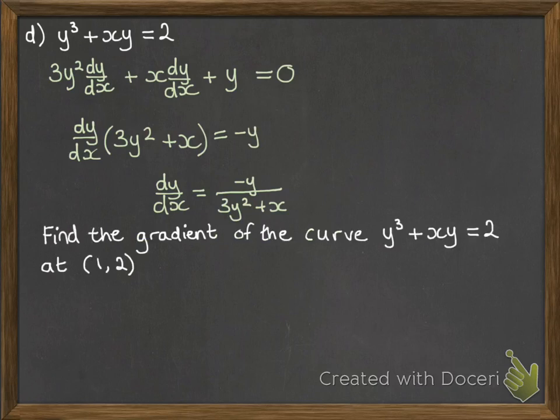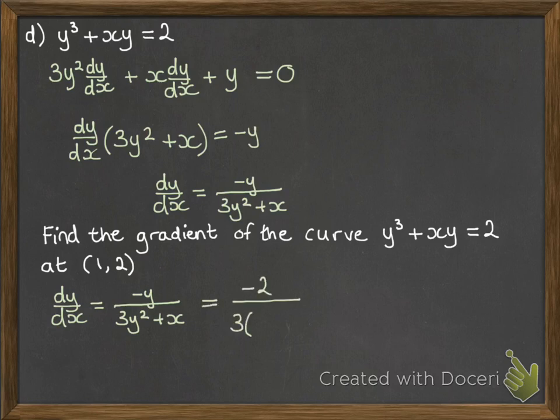Next one, we want to find the gradient of that curve at a particular point. So since we've got those coordinates, we've just worked out what the gradient function would look like. So we need to put our x and y coordinates in like this to get our answer.